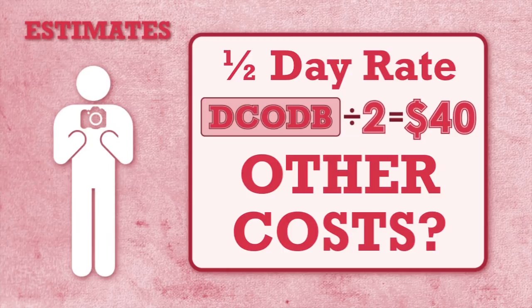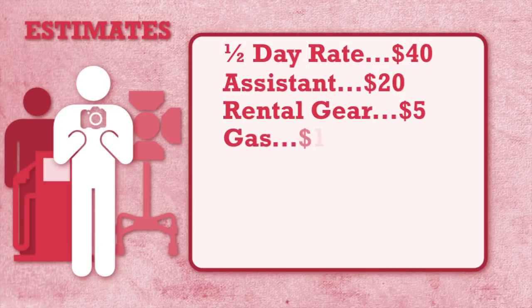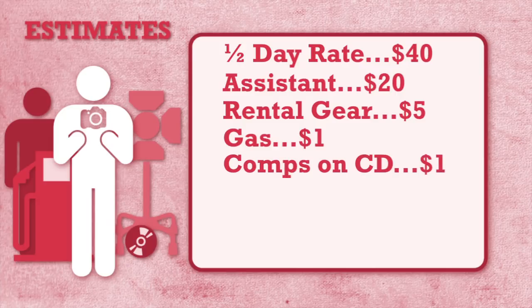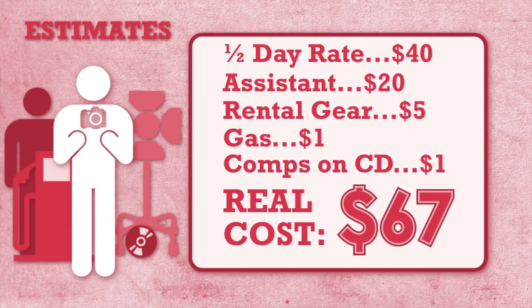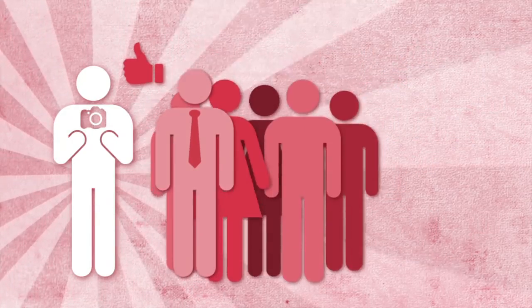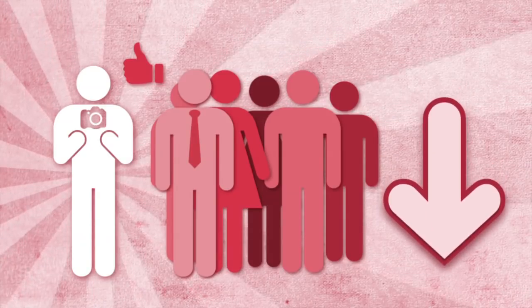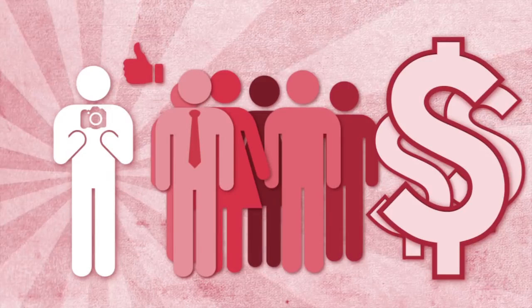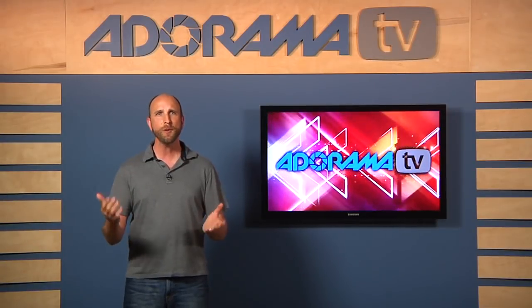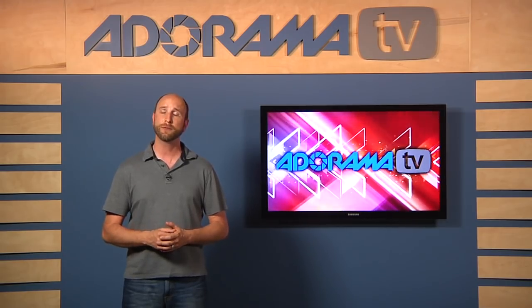What about other costs? Let's add everything up with some example numbers. You're going to need an assistant — that's $20. You need some rental gear because you don't own everything — $5. You need gas to get to that location — $1. And you need to give the client some comps on a CD — about $1. So the real cost is actually $67. But don't do this in your head — do the math and make sure you get it right. Photographers who've been around a while won't give you an answer on the spot; they need to calculate costs accurately.